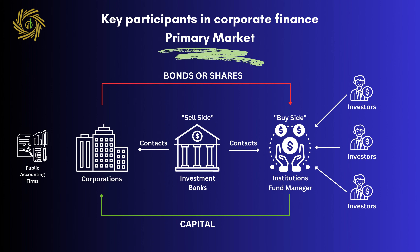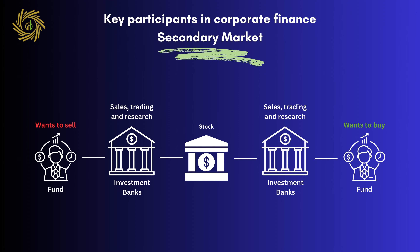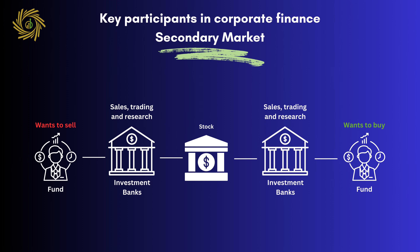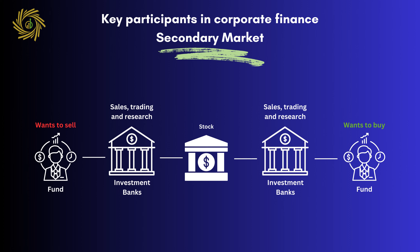These players operate in the primary market, where new shares and bonds are issued by corporations. Moving on to the secondary market, additional institutional investors or fund managers want to buy securities of publicly traded companies, while some fund managers may want to sell their positions. Investors buy and sell on a stock exchange or over the counter using investment banks that have sales and trading departments, as well as equity research departments that facilitate transactions between investors. Unlike the primary market, where corporations issue new securities, the secondary market involves transactions happening solely between investors. This is why it's called the secondary market, as the corporations that issued the shares aren't involved. Investors seek assistance from investment banks to buy and sell shares in already publicly traded companies.